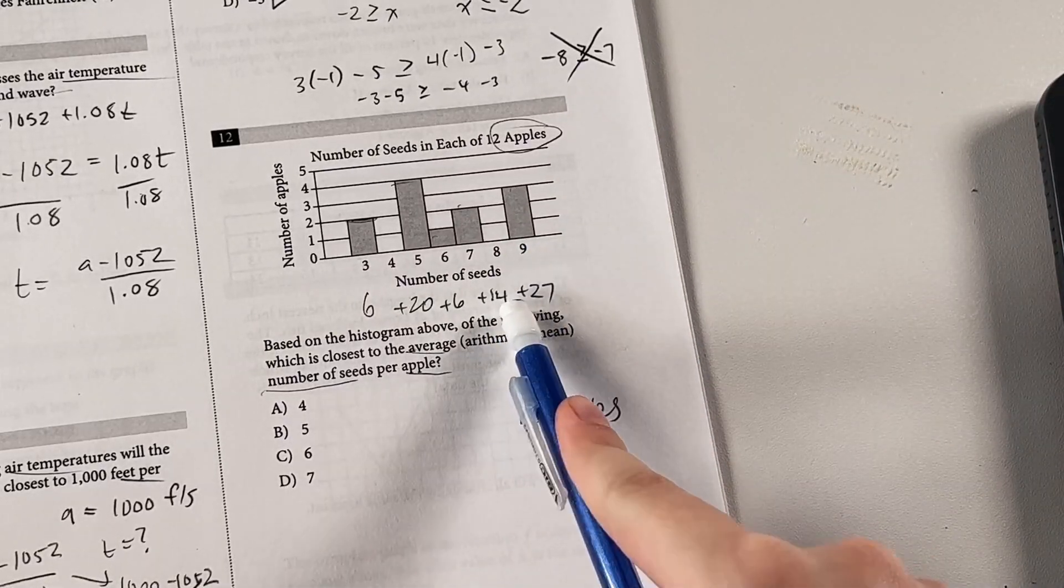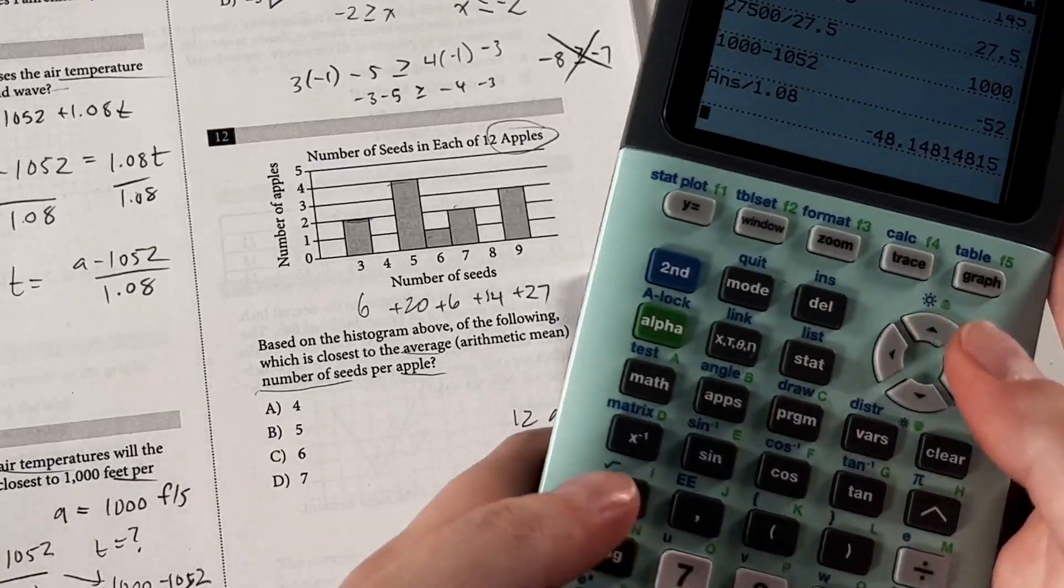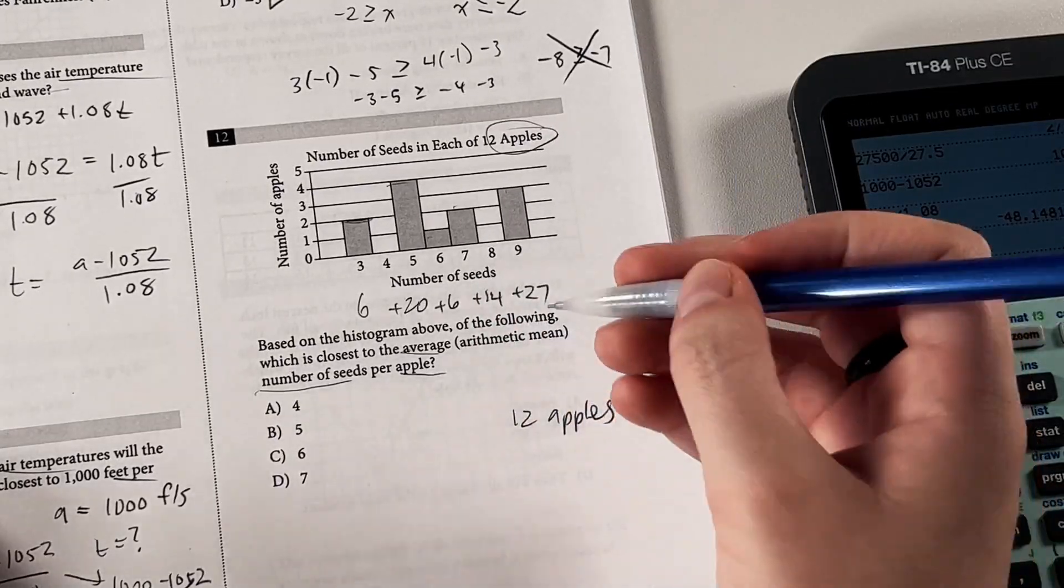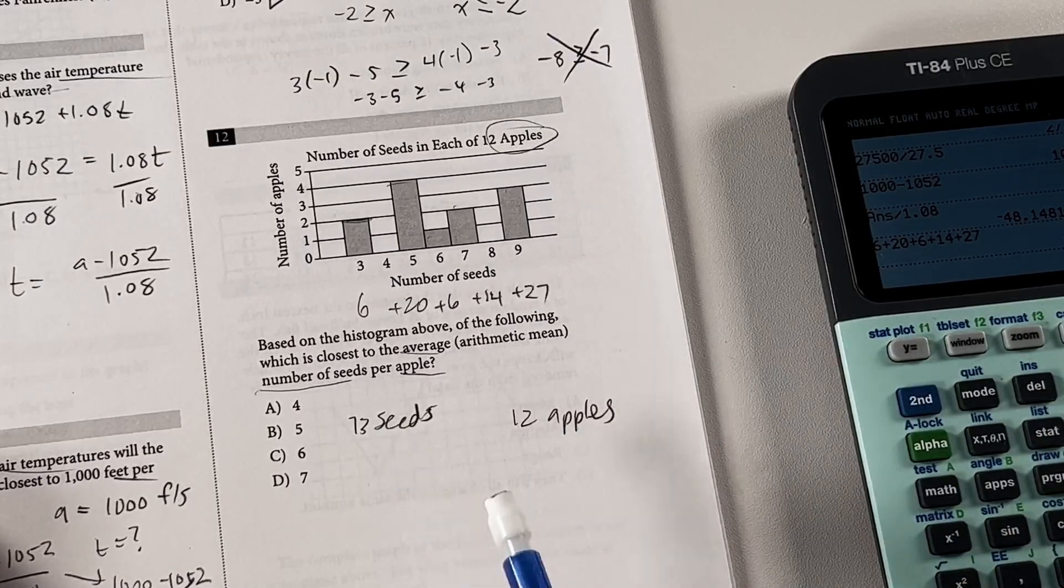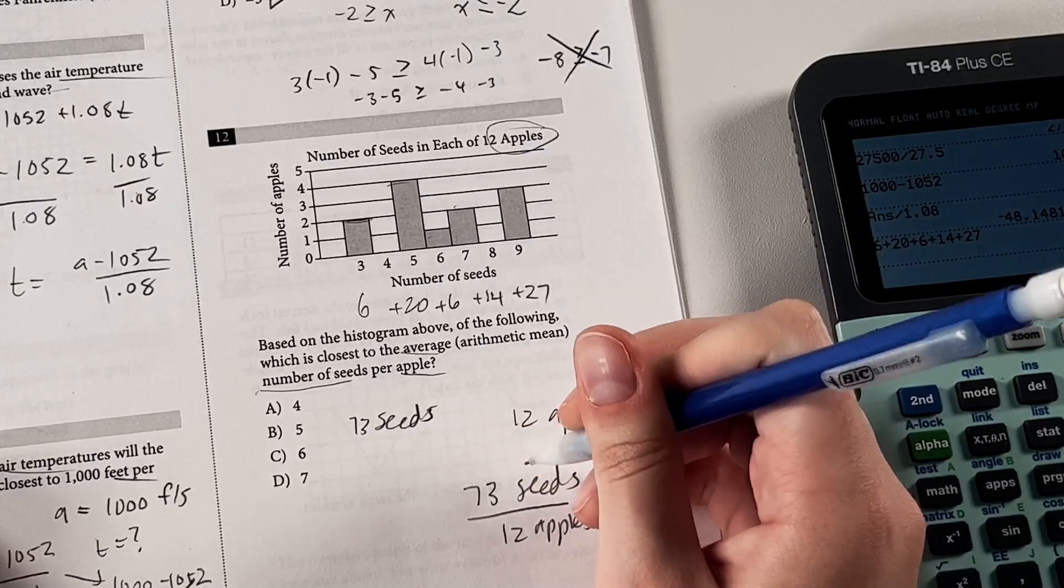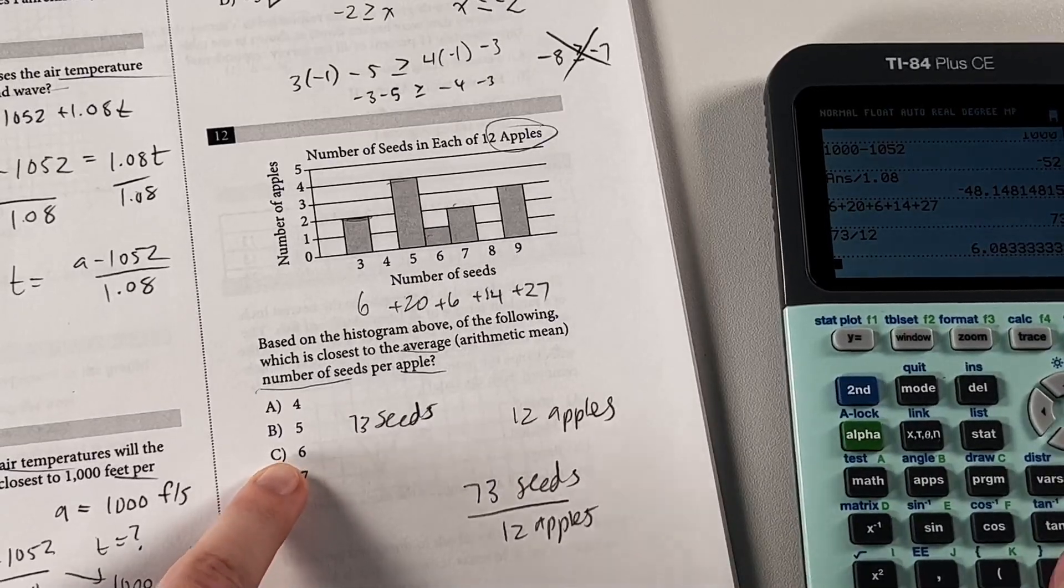So if we add that up, that's the total amount of seeds in the apples altogether. That's why we have our calculator for this section. So we get 73 seeds total. So now to find the average seeds per apple, we can just divide the 73 seeds by the 12 apples that we have. That'll get us seeds per apple. And that is close to six, which is one of our answer choices.